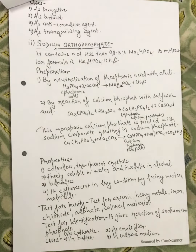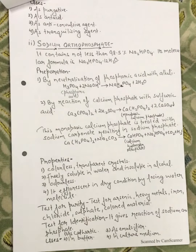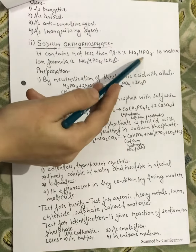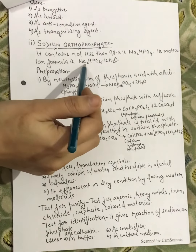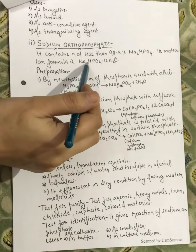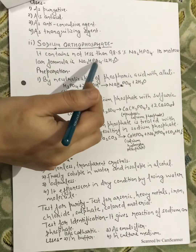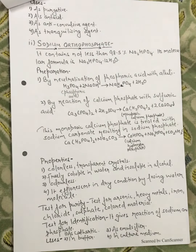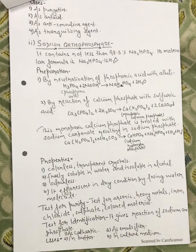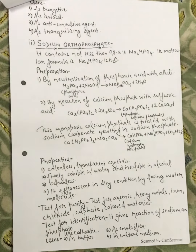In this video we are going to study about sodium orthophosphate. It contains not less than 98.5% of sodium orthophosphate. Its molecular formula is Na2HPO4·12H2O — it will be present in hydrated form. Sodium orthophosphate is the next drug for the cathartics. Now let's look at its preparation.